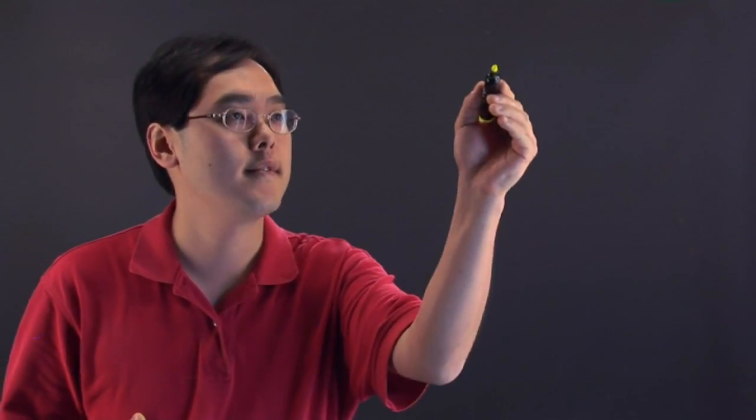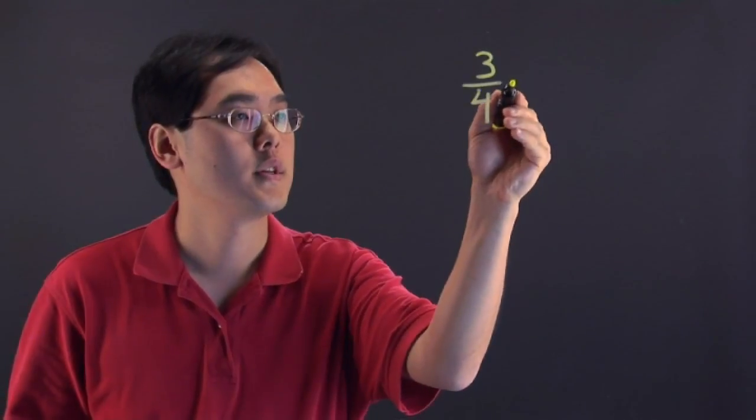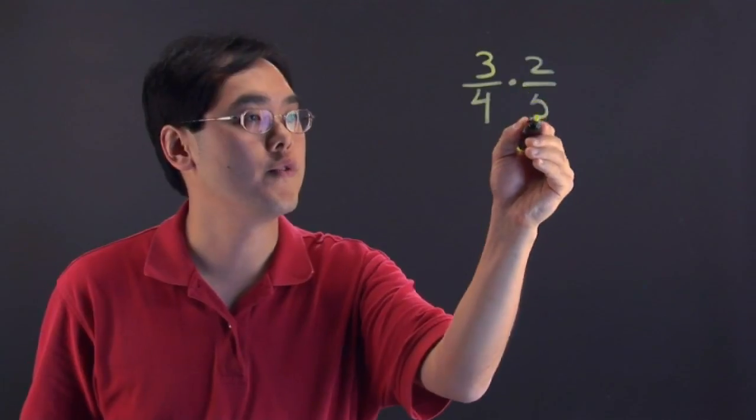So here we go. Now let's just say when you multiply two ratios suppose you have 3 fourths times 2 fifths.